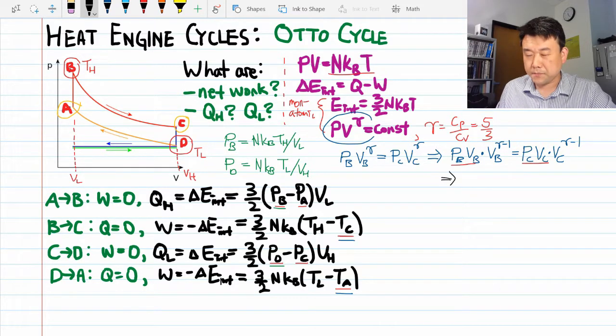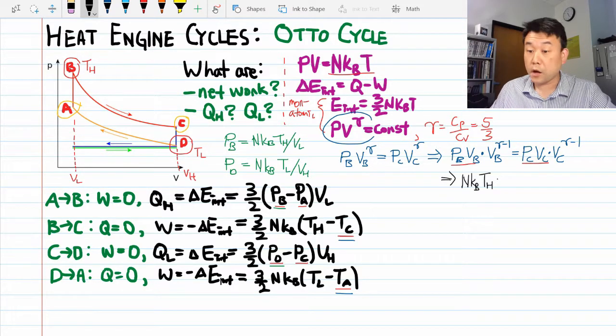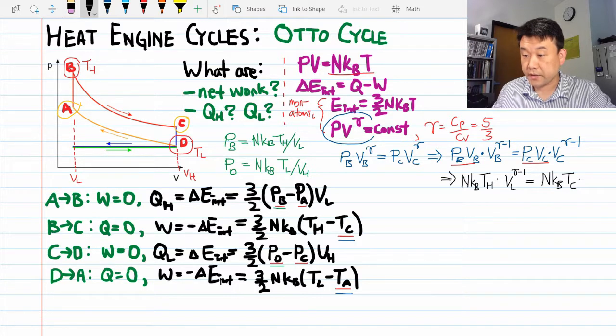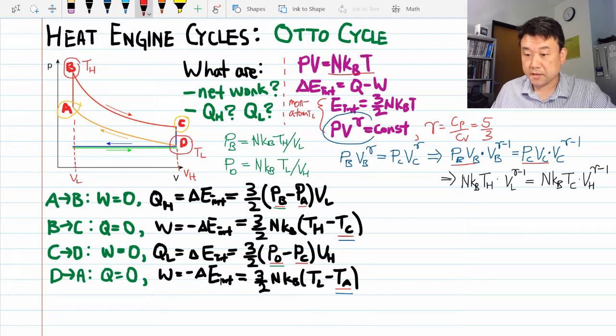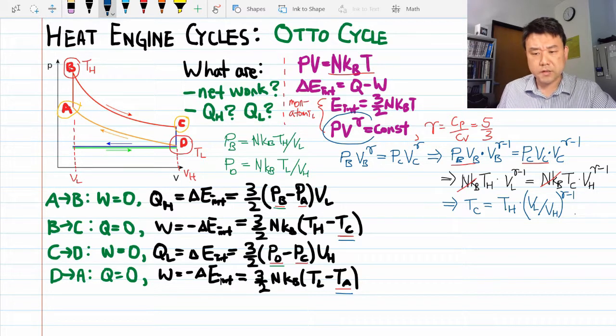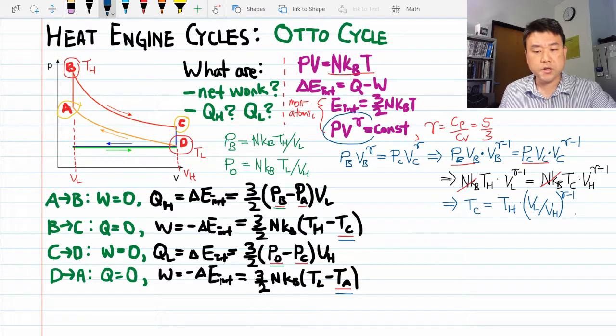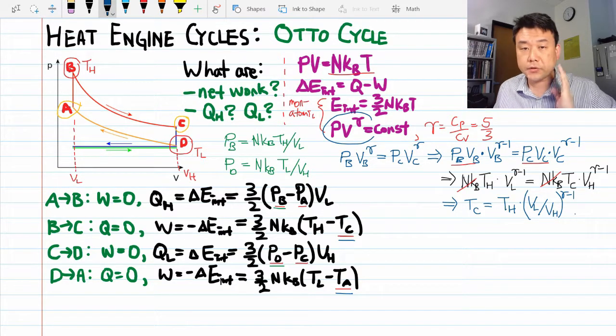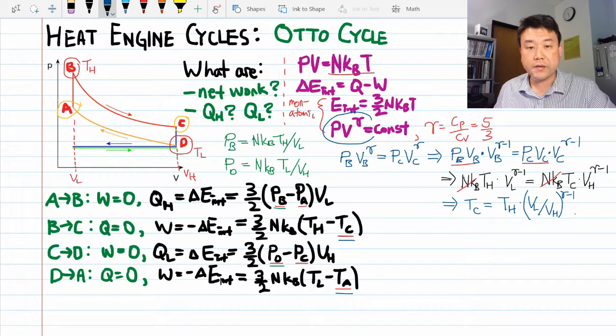At point B, the temperature is TH, and the volume is VL. And I can express the temperature at point C. And at point C, volume is VH. Some things nicely cancel out. And we can solve this for TC here. And we can imagine going through similar calculation with TA. I'll leave it to you to do the step-by-step calculation. Let me write down the result here.